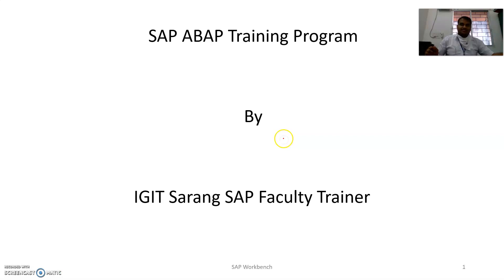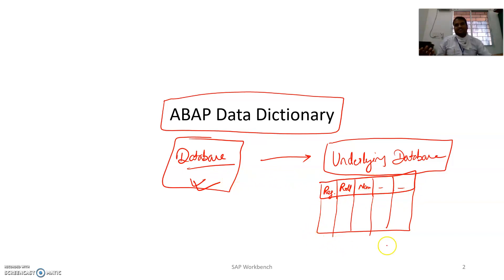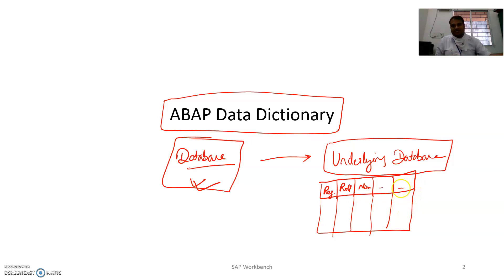Welcome to the SAP ABAP training program. Here we are going to learn about the ABAP Data Dictionary. Data is stored in a database — millions of records exist. As a customer or employee, I don't need all that data. I need a specific set of data, so I define the structure, table type, and requirements in the ABAP Data Dictionary.